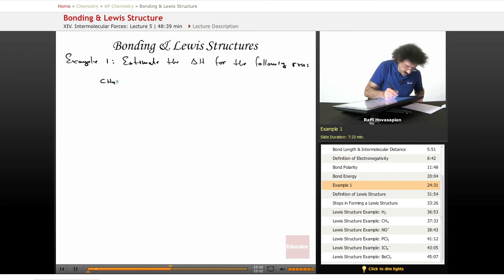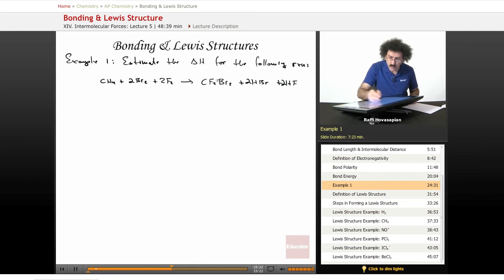We have CH4, which is methane, plus two Br2s, plus two F2s, goes to CF2Br2, plus HBr, plus HF. And if I'm not mistaken, this should be a 2, and this should be a 2. So we have this equation here, and we want to calculate the delta H for this.